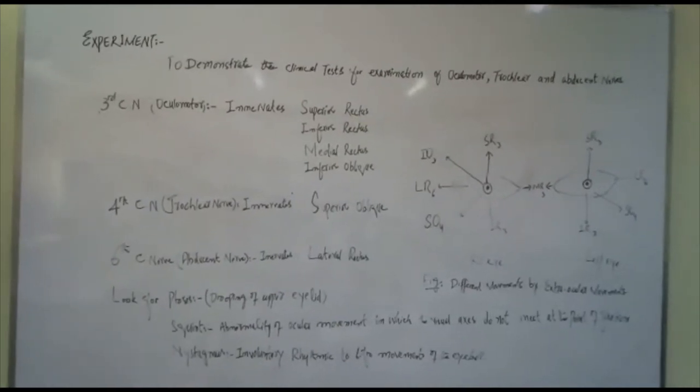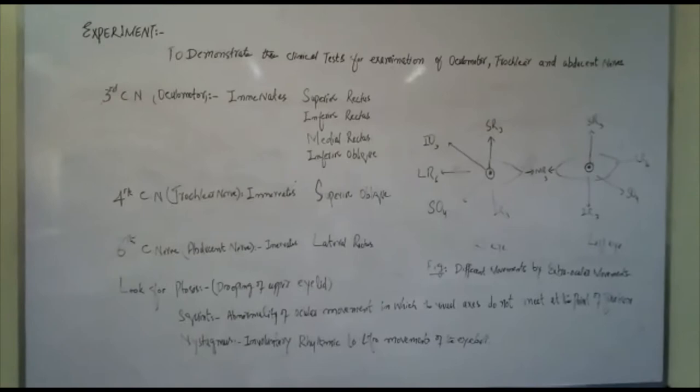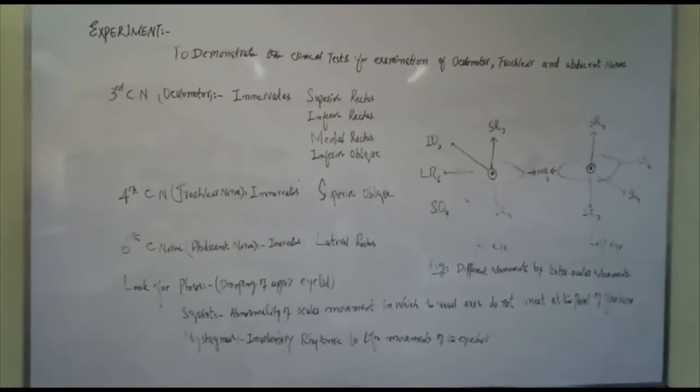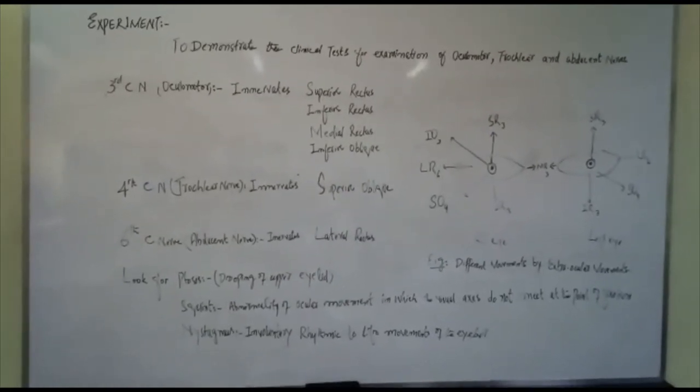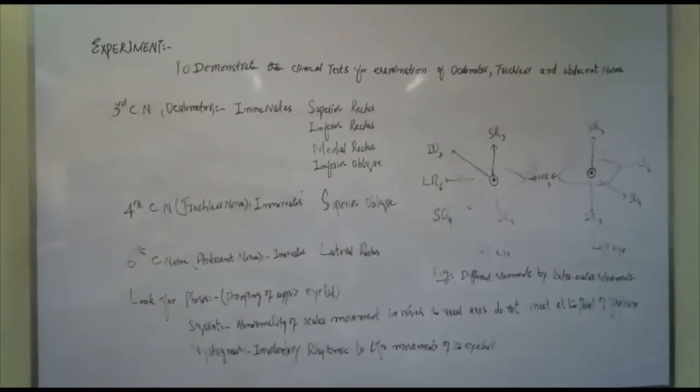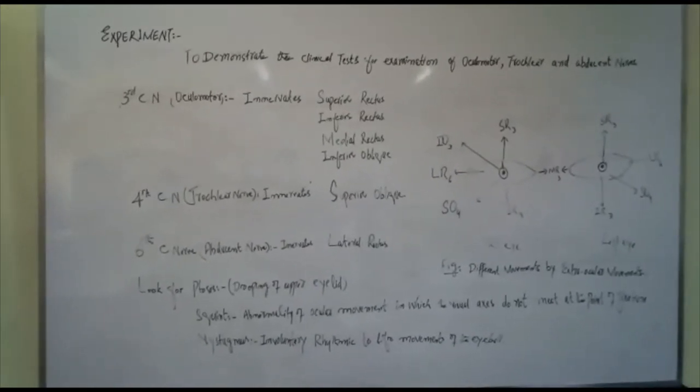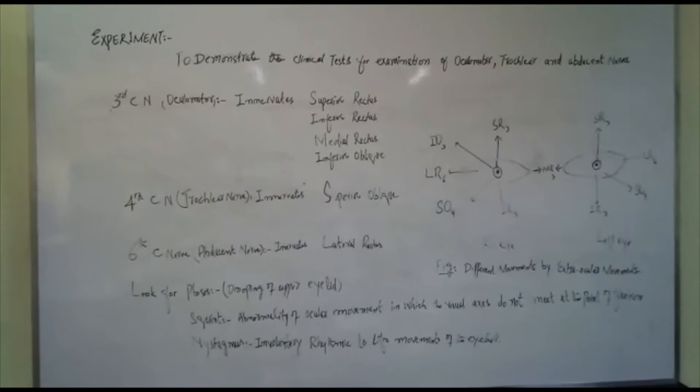These cranial nerves supply extraocular and intraocular muscles. 3rd cranial nerve, oculomotor nerve, innervates superior rectus muscle, inferior rectus, medial rectus, and inferior oblique muscle. 4th cranial nerve, trochlear nerve, innervates superior oblique. 6th cranial nerve, abducent nerve, innervates lateral rectus.